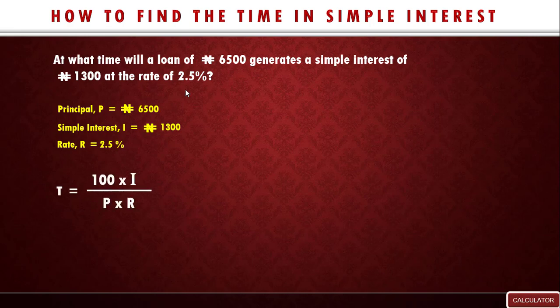And the formula T equals 100 times I over P times R. So let's now fix in the value that we are given. So T equals 100 times 1300 over 6500 times 2.5.